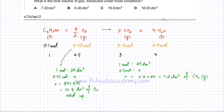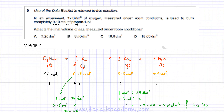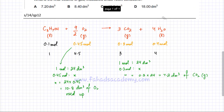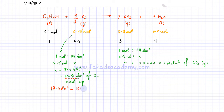So 10.8 dm³ of oxygen gas is being used up, and 7.2 dm³ of CO2 is being produced. The key trick: the question states you were initially given 12 dm³ of oxygen. Only 10.8 dm³ of oxygen takes part in the reaction, which means you're still left with 1.2 dm³ of unreacted oxygen gas.